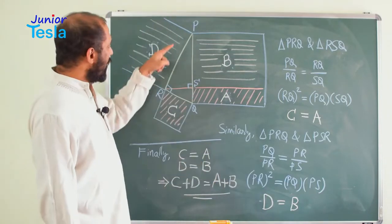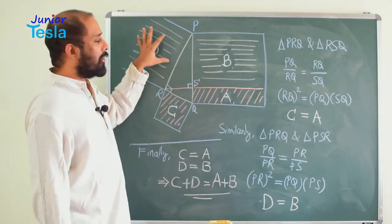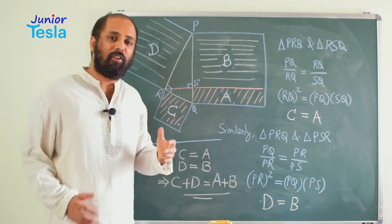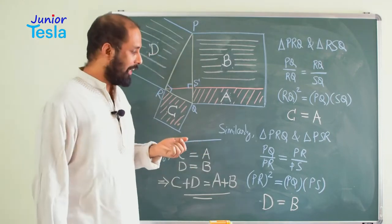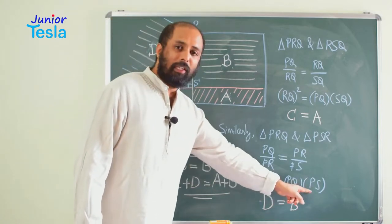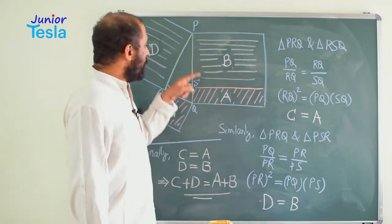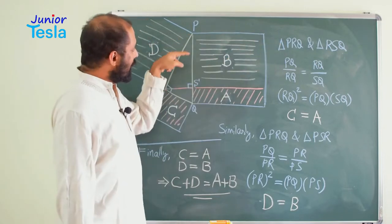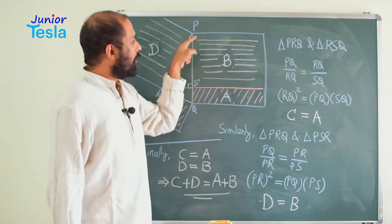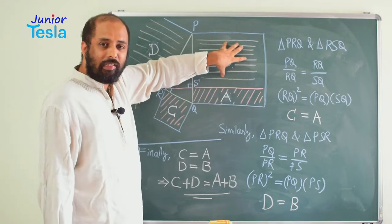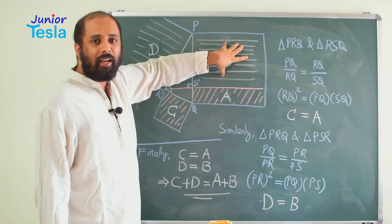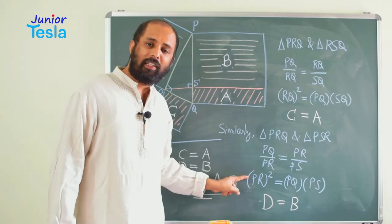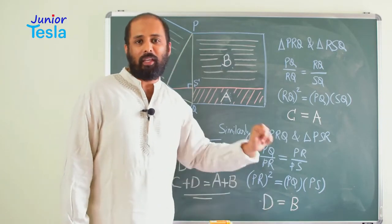Now what is PR square? PR is this length, so PR square is the area of this particular square, which is denoted by capital letter D. PQ into PS — PQ is this length, which is also equal to this length, and PS is this length. So this into this is nothing but the area of this rectangle, which is denoted by capital letter B. So from this relation, we can say D equal to B.